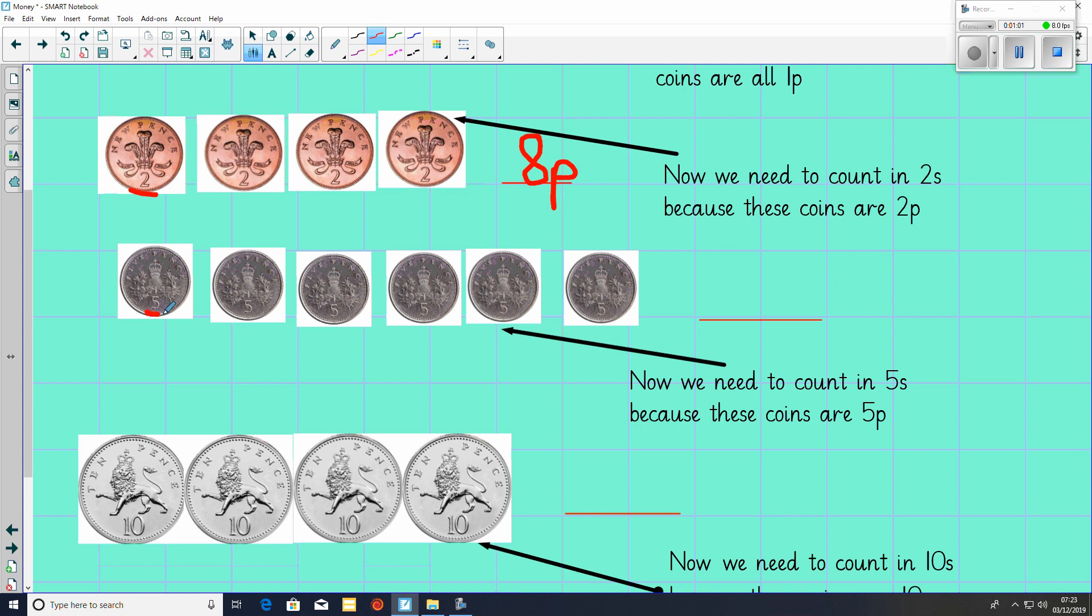Then we are counting in 5's. 5, 10, 15, 20, 25, 30. 30 pence all together.